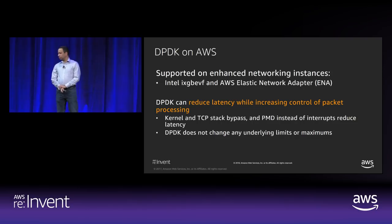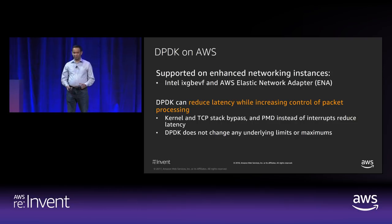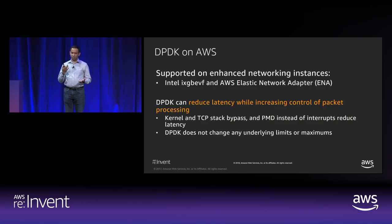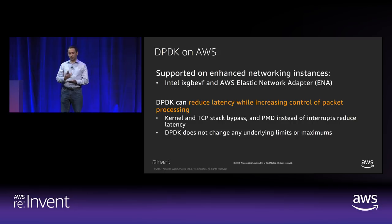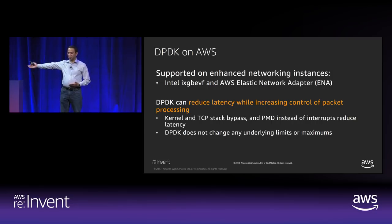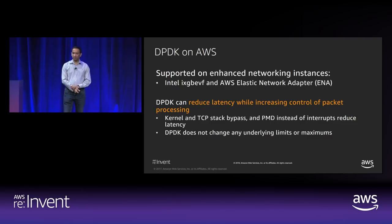The key takeaway is: take an AMI with ENA enabled and run it on our latest generation instances. Depending on your requirements, you now have a diverse range from up to 5 gigs on T3 to 100 gigs on C5N.